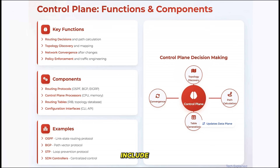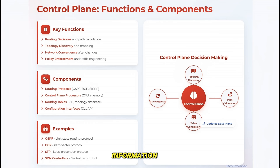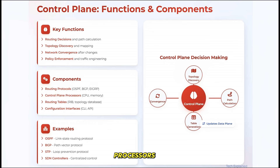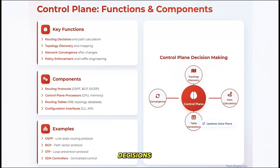Key components include routing protocols like OSPF, BGP, and EIGRP, which exchange information to build a picture of the network. There are also control plane processors — typically the CPU in network devices — that run these protocols and make decisions.